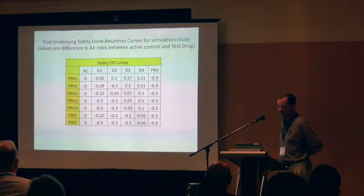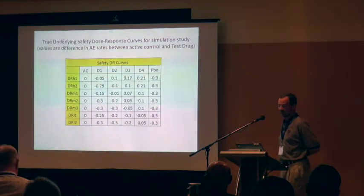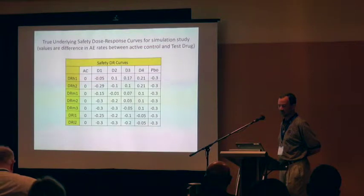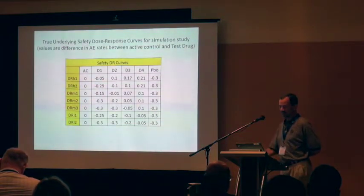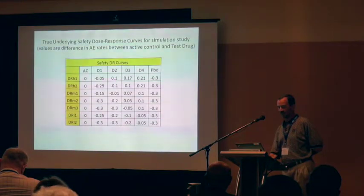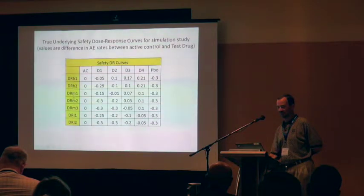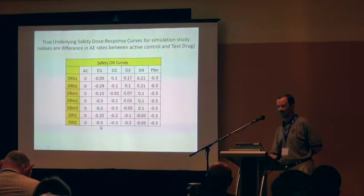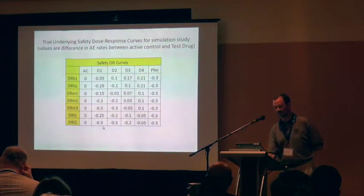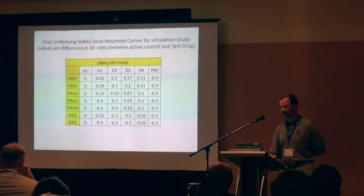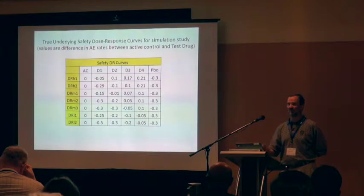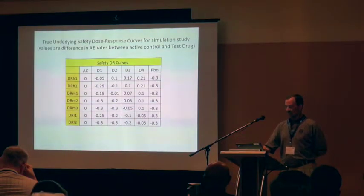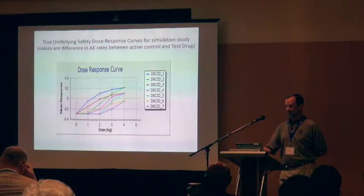For tolerability, these are expressed as differences of proportions of adverse events, again differences from the active control. We had high levels of difference, medium levels of difference, and low levels of difference, where a negative indicates a smaller proportion of AEs than control. So there's a spectrum of possibilities, and those tolerability curves are plotted on this slide.